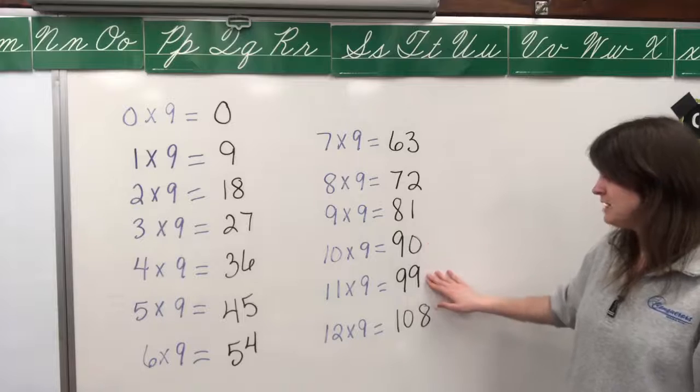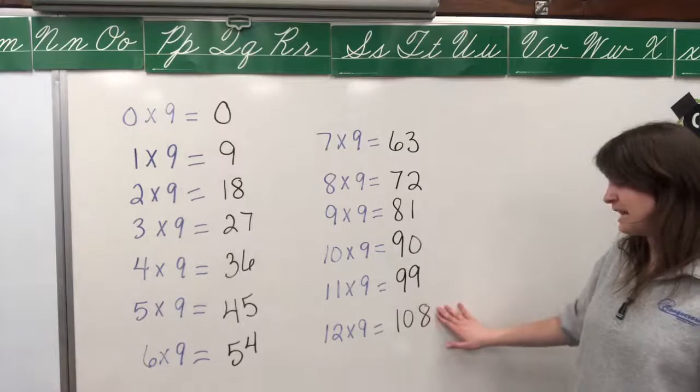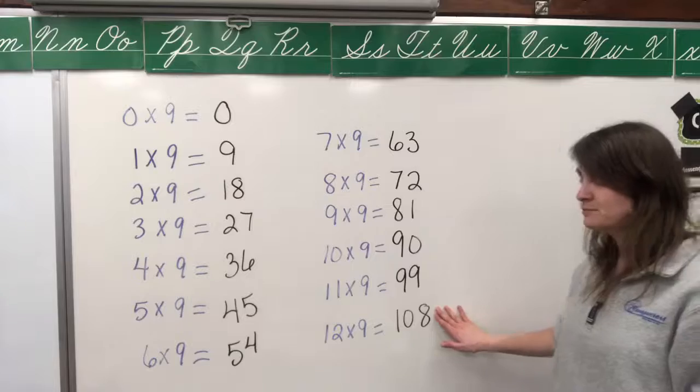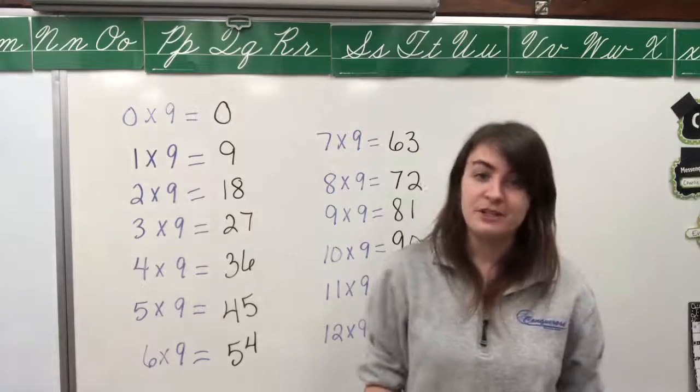Now remember, division is the opposite of multiplication. So we can take those numbers that we just sang in the song and divide them by nine in order to get the answer when we divide by nine.